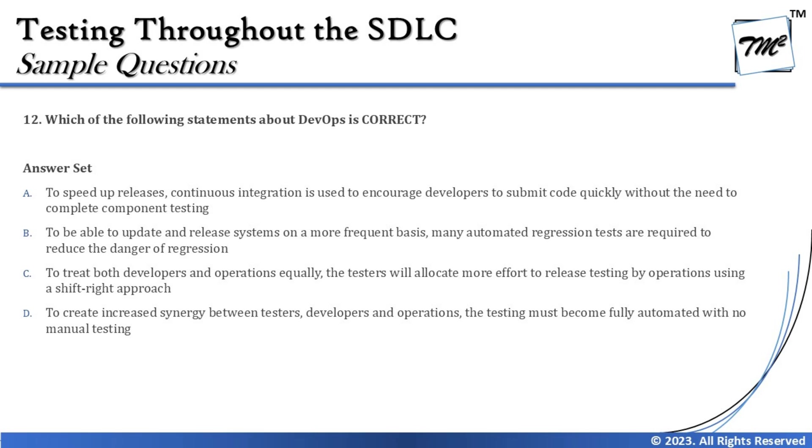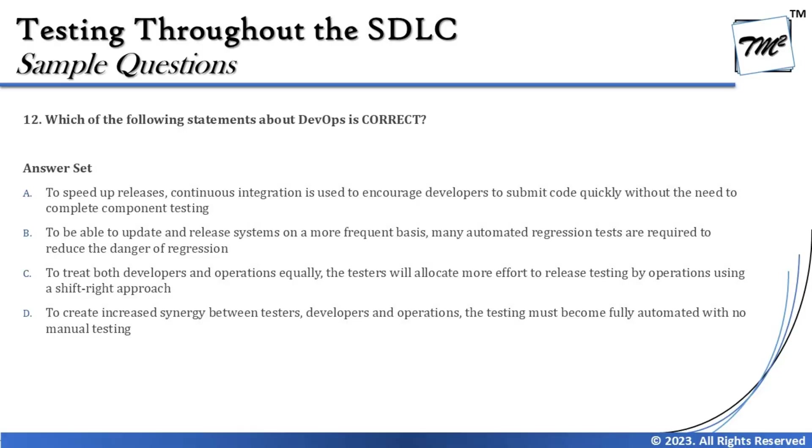Option C says: to treat both developers and operations equally, the tester will allocate more effort to release testing by operations using a shift right approach. This is the biggest myth about DevOps. In the syllabus, the word 'development' includes testing within it. We are always talking about shift left by using DevOps, not shift right, so Option C is wrong.